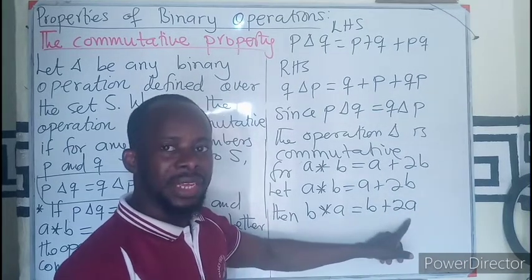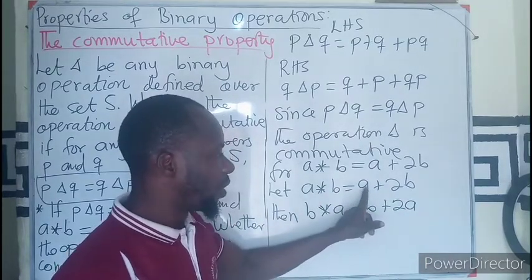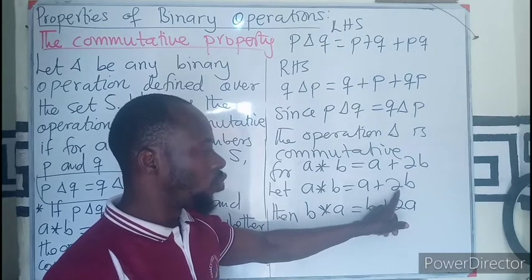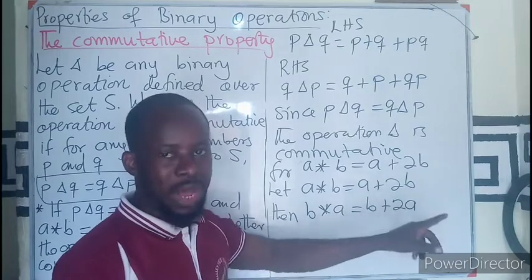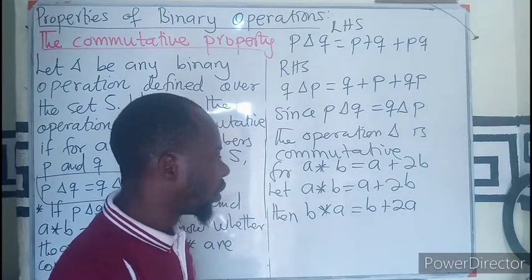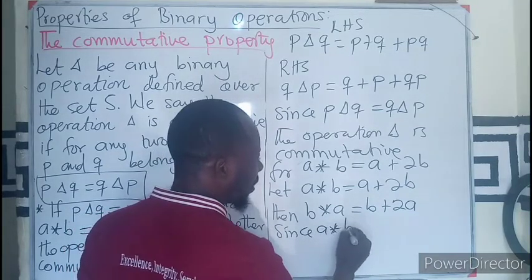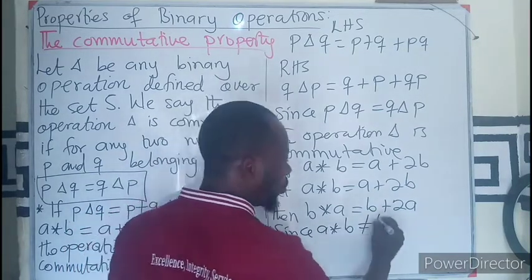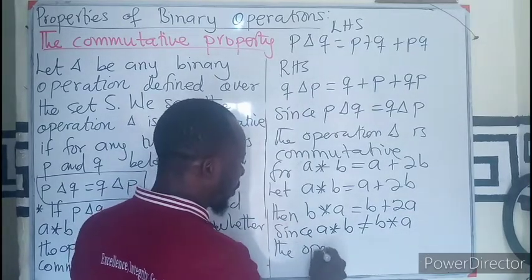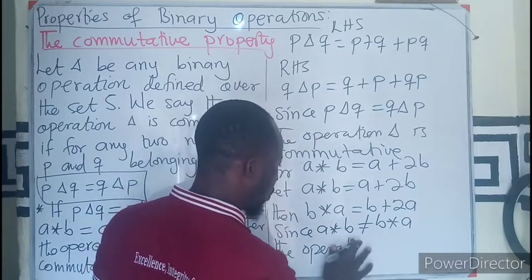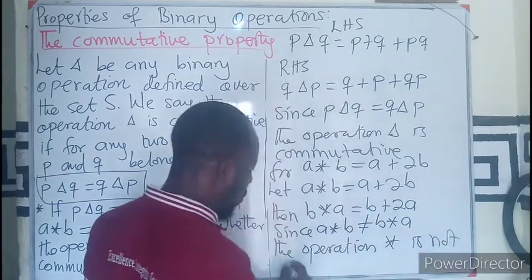Obviously you can see that if A is 1 and B is 2, this would have been 1 + 2 × 2 = 5. This would have been 2 + 2 × 1 = 4. The order will have changed. So we can say that since A * B is not equal to B * A, the operation * is not commutative.